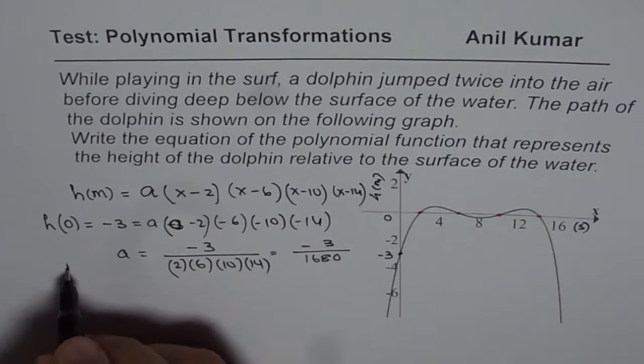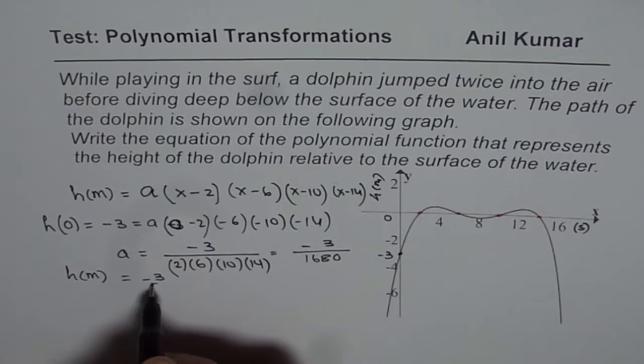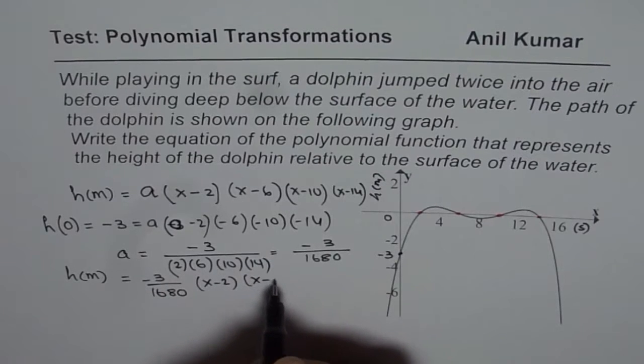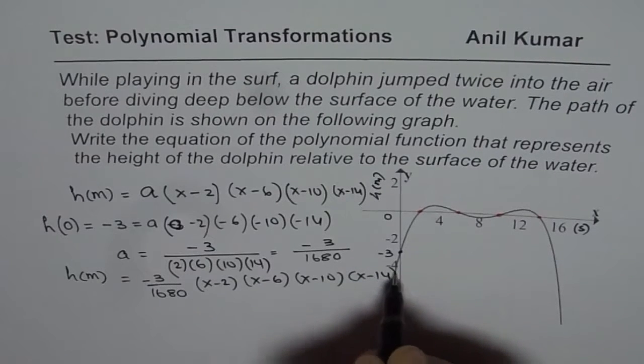So we get our function as height of the dolphin is equals to minus 3 over 1680, x minus 2 times x minus 6 times x minus 10 times x minus 14.